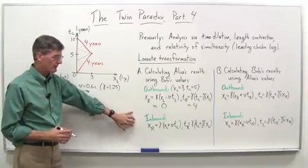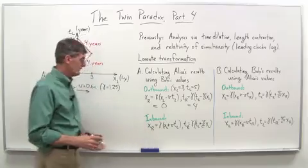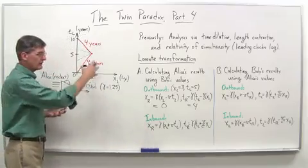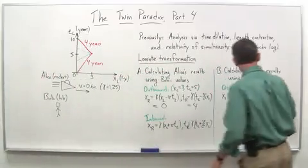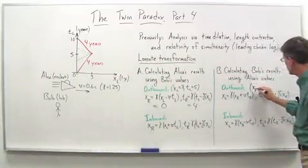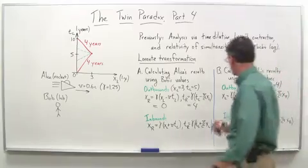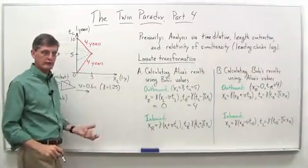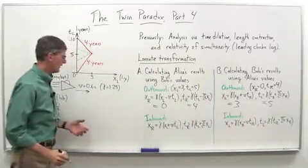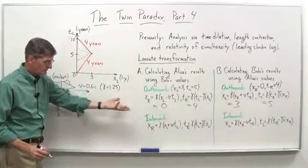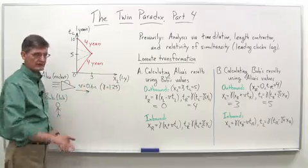Now for the outbound trip calculating Bob's results using Alice's values. We know Alice's XR at the turnaround point equals zero and TR equals four. Plug those values in, and you get, as you should, XL equals three light years and TL equals five years. In other words, Bob's measurement of that space-time point is three light years and five years. So that checks out, as it should.